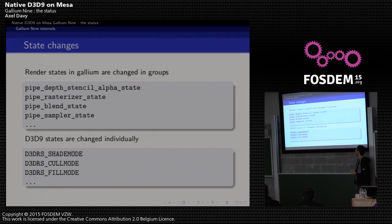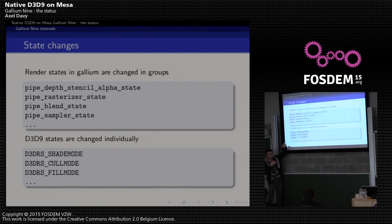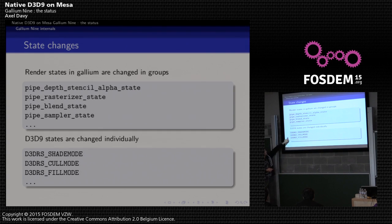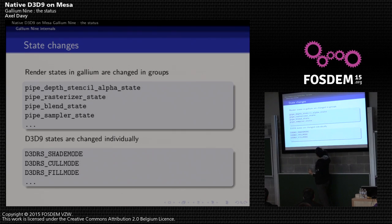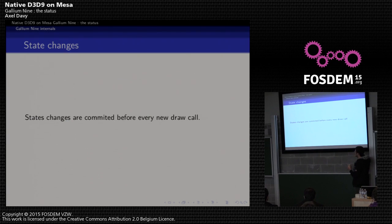In Gallium Nine, state changes happen in groups: you have a list of states set individually, but in reality they're updated by groups. Developers know which state changes happen together and optimize so few groups are updated. What we do in Nine is implement these groups — at draw call time, one group is updated per state change. According to the documentation, state changes must only be committed at draw calls — so when you call DrawPrimitive, everything is sent to the GPU.